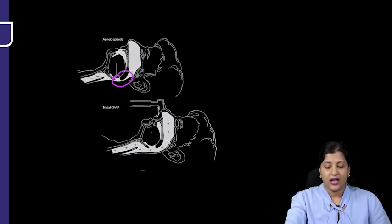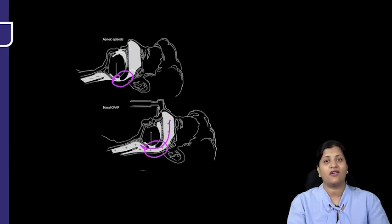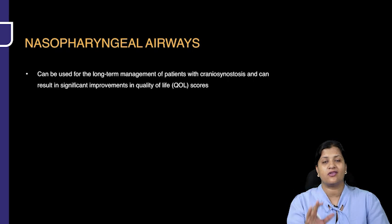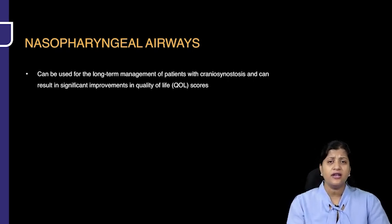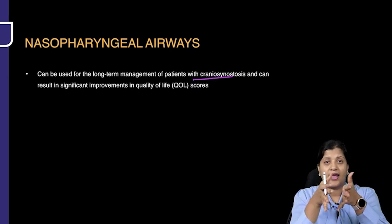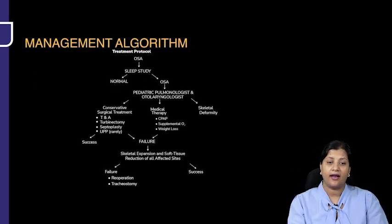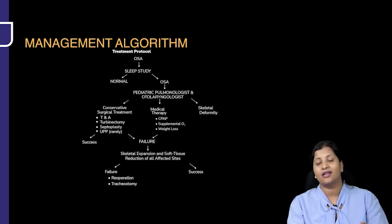In an apneic episode, there is obstruction in the airway. With CPAP, positive pressure acts like a splint that keeps the airway open. A nasopharyngeal airway can be given if there is a patient with craniosynostosis where there is narrowing of the nasal and nasopharyngeal airway, but this is not something done on a regular basis.